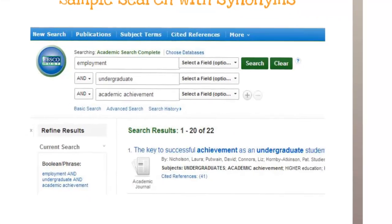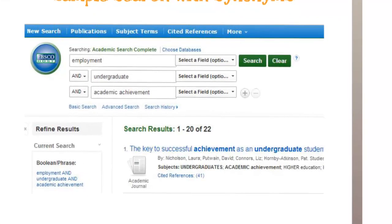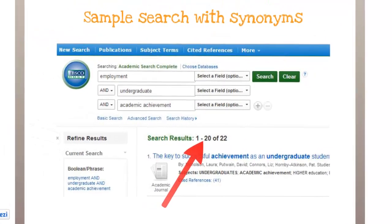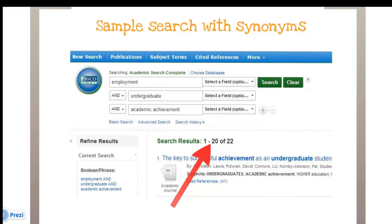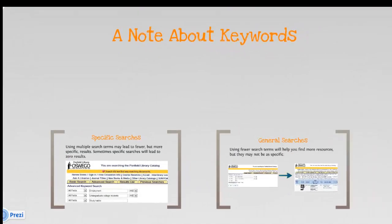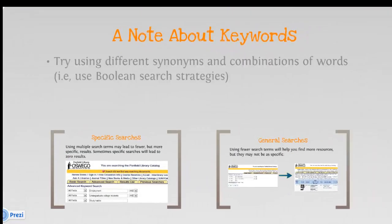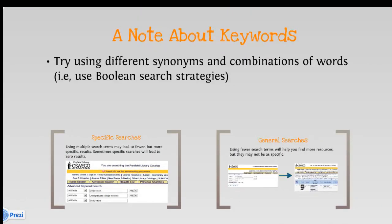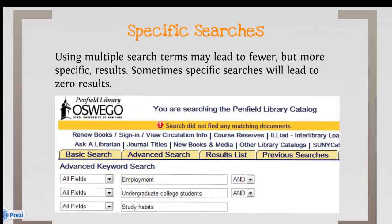Searching the database with a new set of keywords helped me locate 22 articles instead of six. As you search for resources, you may need to try using many different synonyms and word combinations to find the resources that you need. You may also need to try multiple databases if you are searching for journal articles.